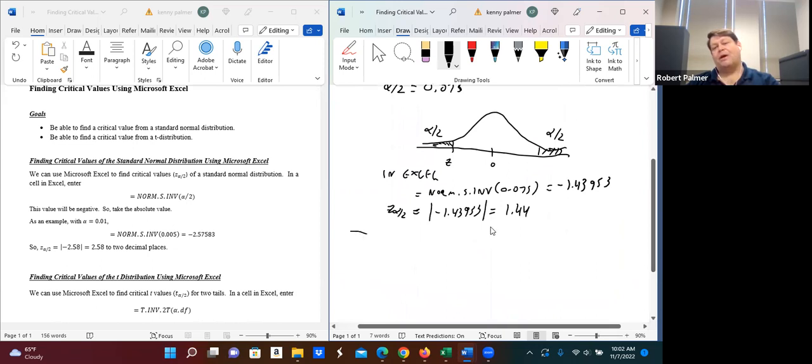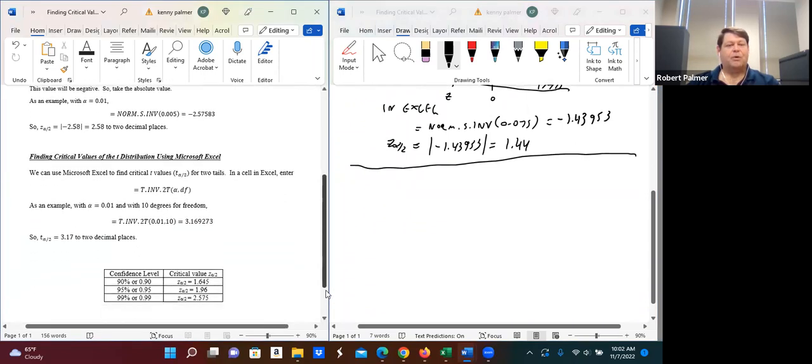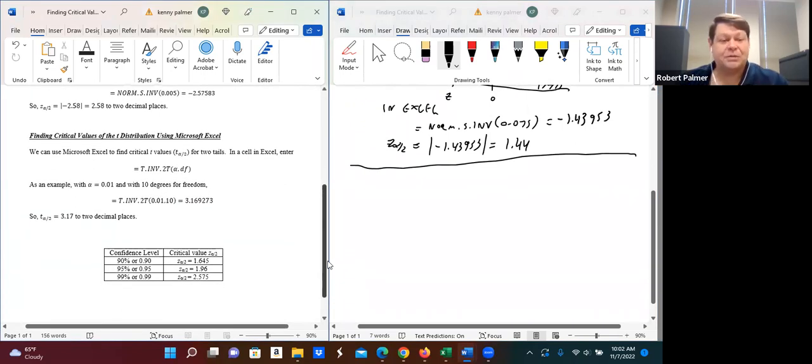Now, let's also do the same thing with a t value. Finding critical values, this is a little more straightforward because there actually is a function for this. We can also use Microsoft Excel to find critical t values, the t of alpha over 2 from the t distribution. In this case, we want to enter our alpha level, alpha, and also a number of degrees of freedom.